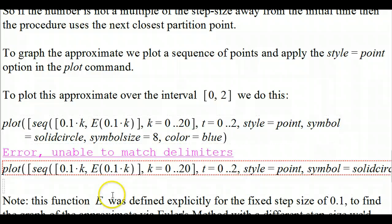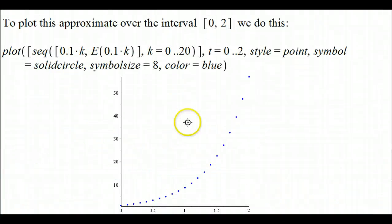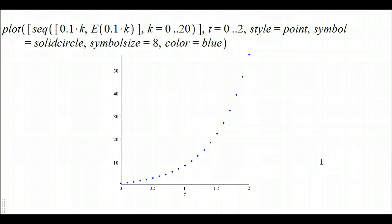Now, when we plot that, I've got to fix it first. I didn't close my right parentheses on the sequence command. Now, we press enter on that again, and we see the sequence of points formed from Euler's method.